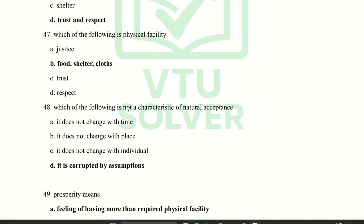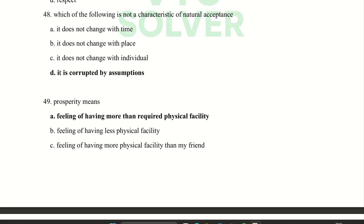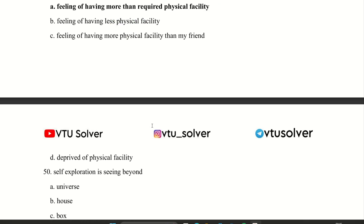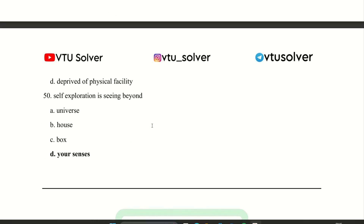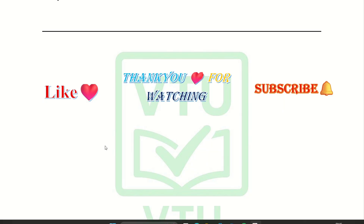Which of the following is a physical facility? Food, shelter, clothes. Which of the following is not a characteristic of natural acceptance? It is corrupted by assumption. Prosperity means the feeling of having more than the required physical facility. The last question: self-exploration is seeing beyond your instincts. These are the questions from Module 1. Read it and thank you for watching our video.